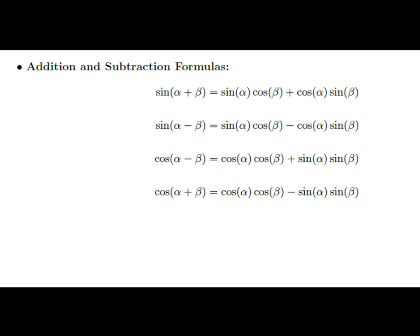We're going to start with the addition and subtraction formulas for sine and cosine. Just looking at this list of four here, you might already be overwhelmed — there's a lot to look at. To simplify it, really all you need to do is memorize the top one and the bottom one. If you do that, you'll be able to figure out the other two formulas on this page and also a lot of the other identities we'll look at later.